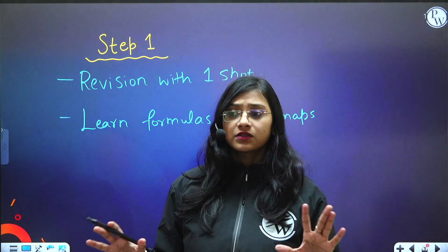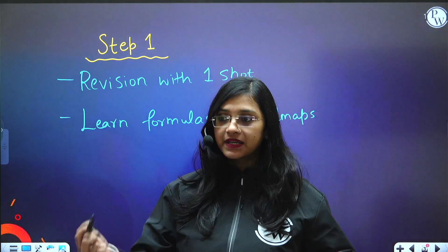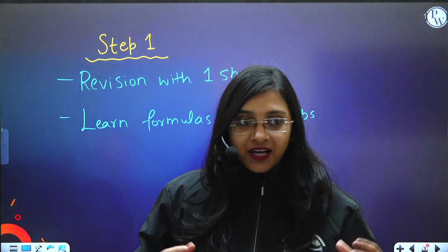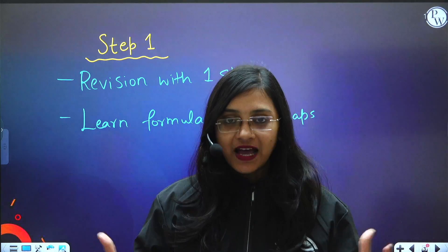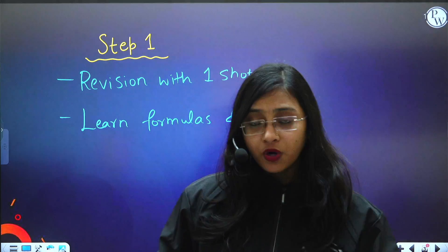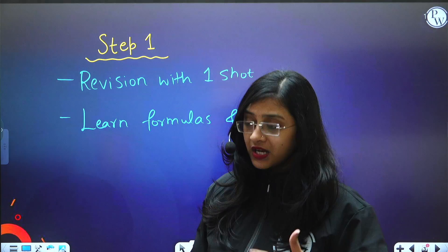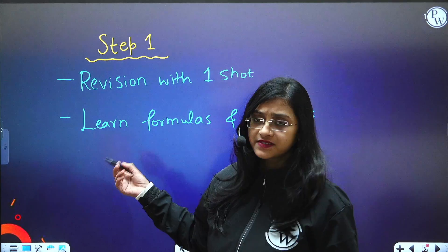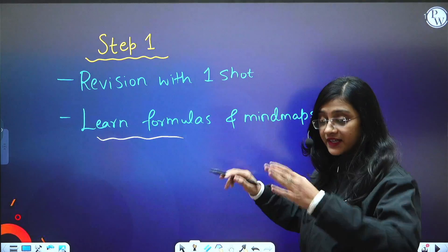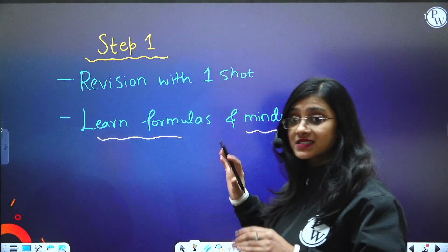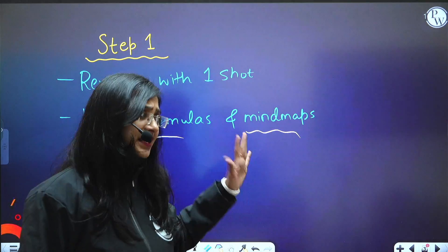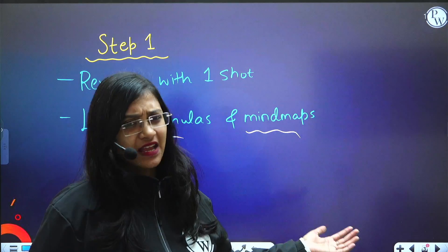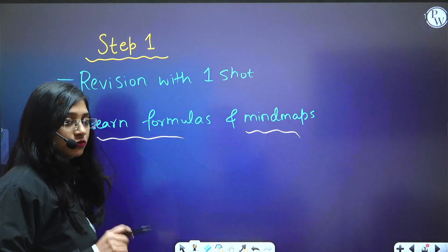Some chapters you might not be able to study from the beginning. You would have studied already, but you might feel like you haven't studied it yet because knowledge is highly volatile - you keep forgetting things. For chapters you've forgotten, especially in physics, chemistry, and math, learn formulas. When it comes to biology, use mind maps to study such chapters. These mind maps are freely available all over the internet.